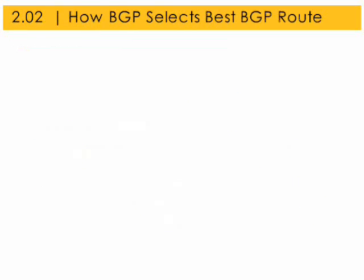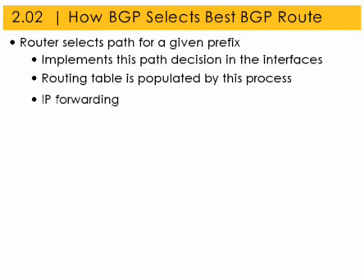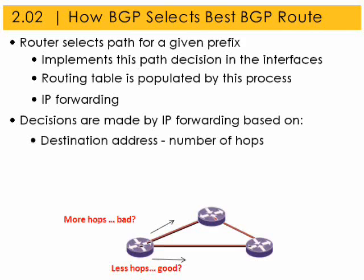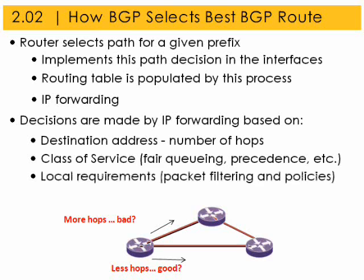BGP routers select the best path for a given prefix. The BGP router implements the path decision in its interfaces and populates its routing table. This process is IP forwarding. IP forwarding decisions are made based on the destination address, which includes the number of hops to reach this address, the class of service in place to this destination, including fair queuing and precedence, and local requirements such as packet filtering and policies.